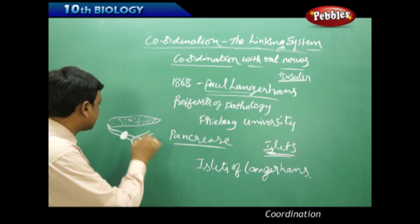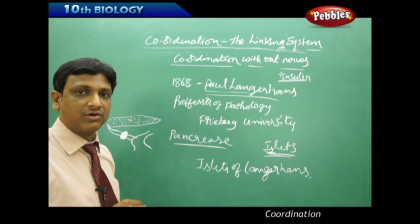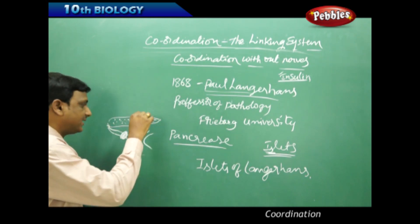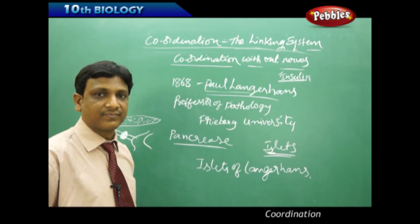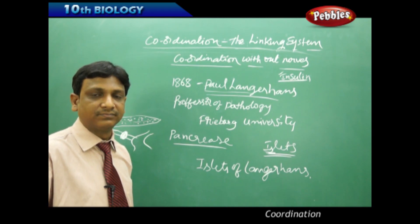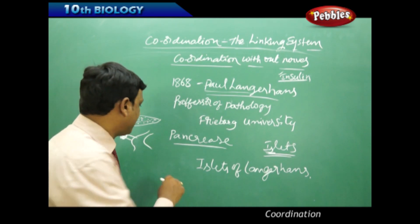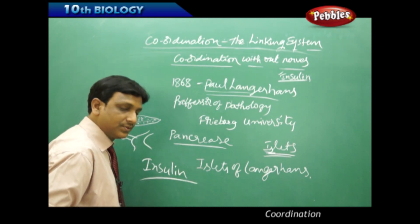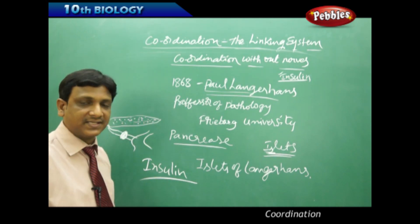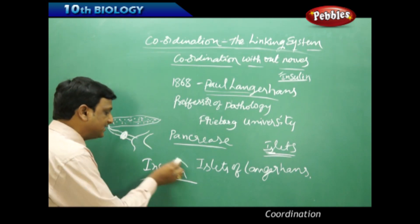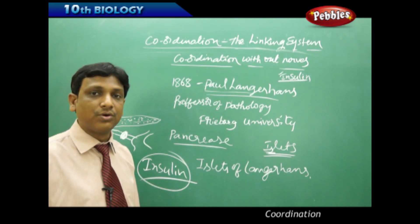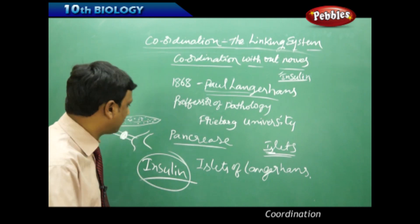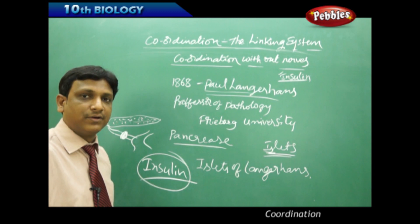They also observed that these islets secrete something directly into the blood, and the blood carries that hormone to different parts of the body. The name given to this secretion was insulin — since 'insula' also means island, the secretion of the islet cells was called insulin. However, they did not yet know how to extract it or separate it; they had only identified that a hormone was being secreted by the islets directly into the bloodstream.